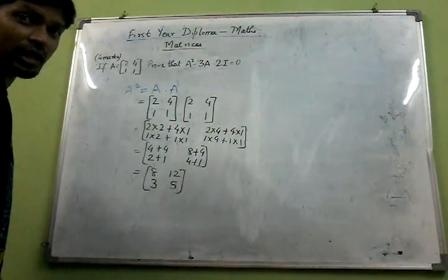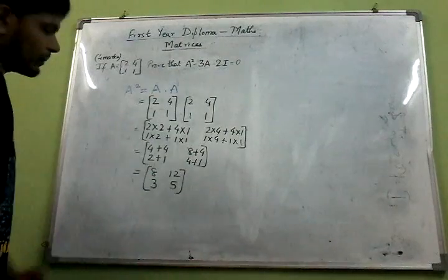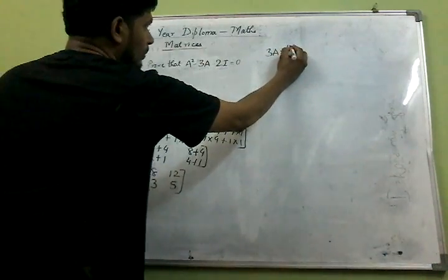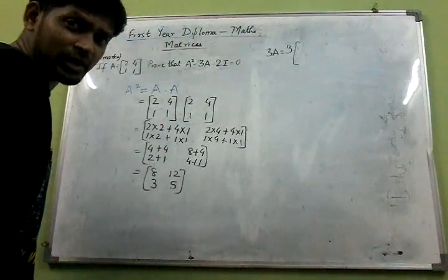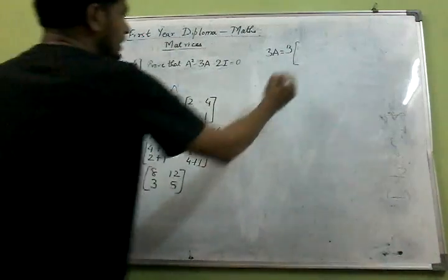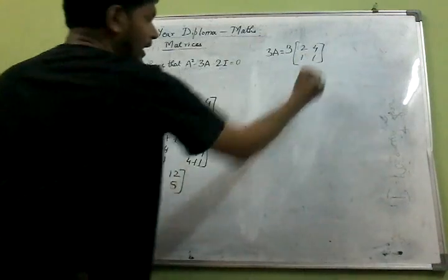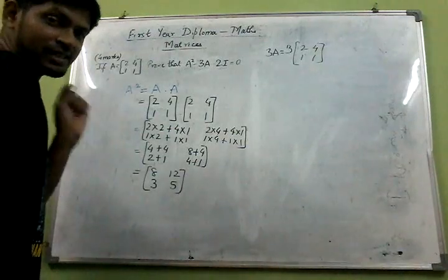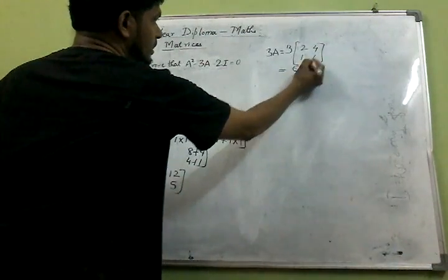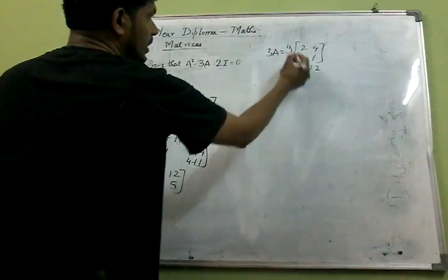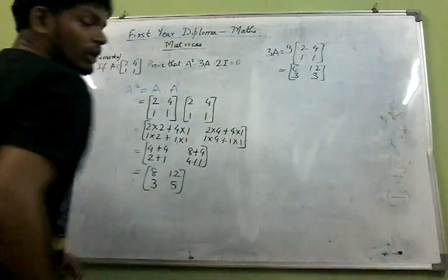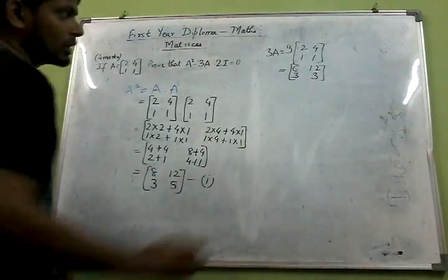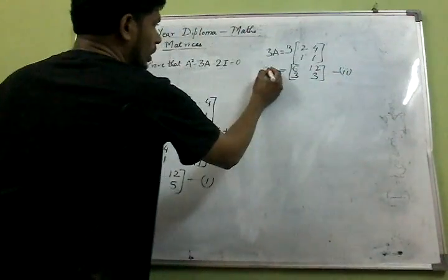Now we need to find 3 into A. We have the matrix A, so we need to multiply 3 with all the elements of matrix A. Matrix A has elements 2, 4, 1, and 1. So this constant 3 will be multiplied with all elements: 3 twos are 6, 3 fours are 12, 3 ones are 3, 3 ones are 3. So here we got 3A, and we can mark it as point number 1.